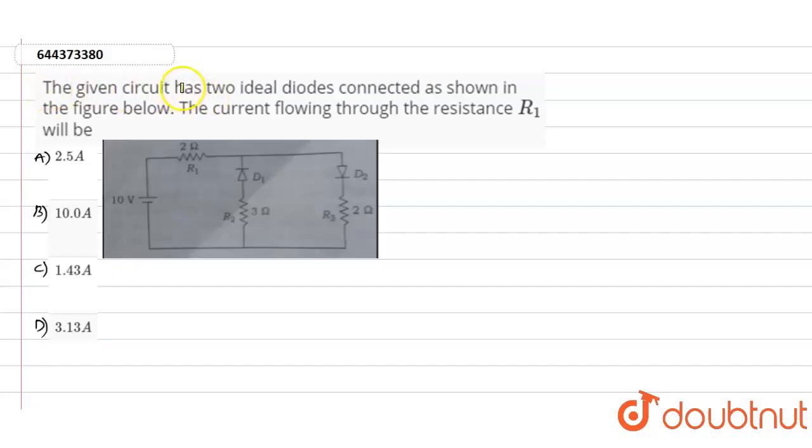question, it is given that the circuit has two ideal diodes connected as shown in the figure below. The current flowing through the resistor R1 will be - so here we need to find out the value of the